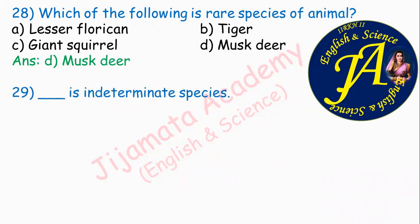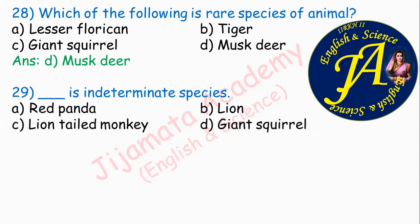Dash is an indeterminate species — meaning we cannot determine whether it exists or not. Options are red panda, lion, lion-tailed monkey, giant squirrel. The correct answer is option D: giant squirrel. Since we cannot confirm its existence in the wild, it is classified as indeterminate — meaning uncertain.